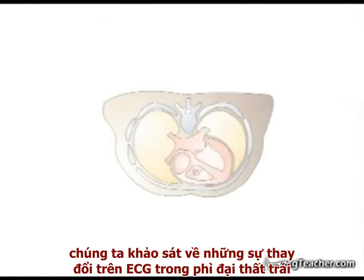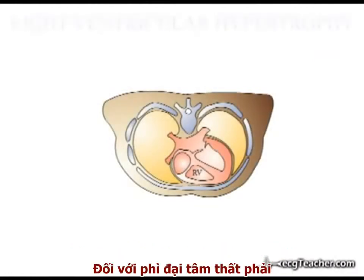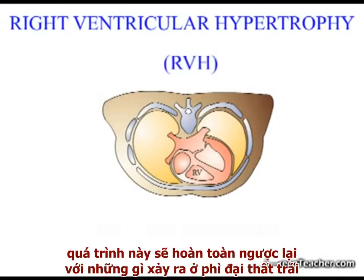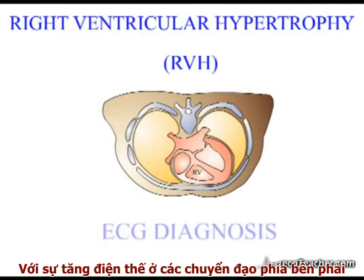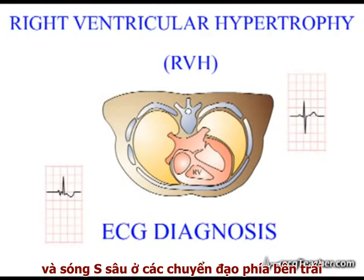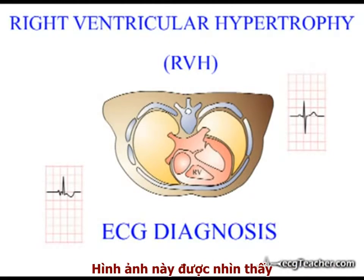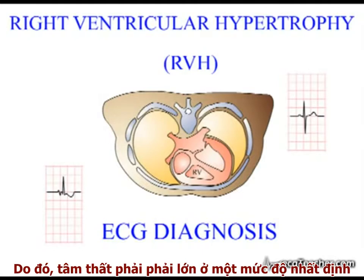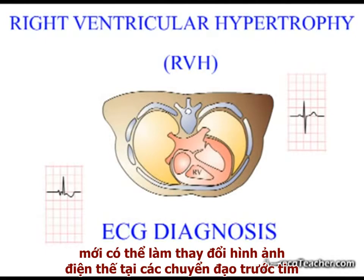In the previous video, we went through the ECG changes associated with LVH in some detail. In right ventricular hypertrophy, we would predict that the opposite process to LVH occurs, with increasing rightward voltages generating abnormally large R waves in the right-sided chest leads and deep S waves in those on the left. While this pattern is seen, because of the dominance of the left ventricle in the formation of the QRS complex, the right ventricle has to enlarge to a very substantial degree to significantly alter QRS voltages in the chest leads.